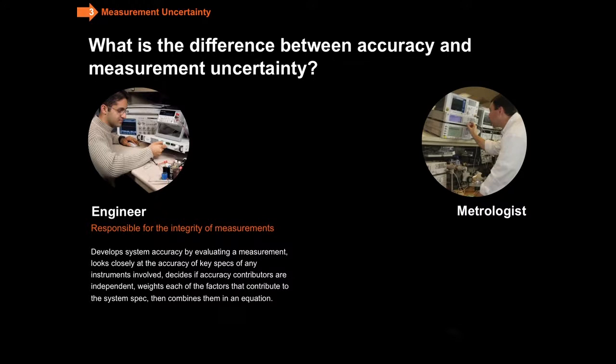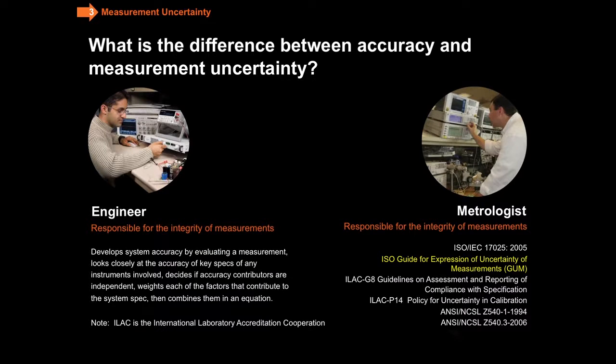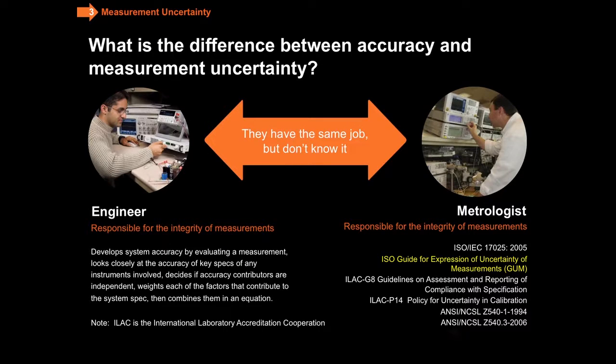So what does a metrologist do? They do almost exactly the same thing, except they follow all of these different standards that you see here. What we're talking about in this module is the guide for the expression of uncertainty of measurements. Engineers and metrologists have essentially the same job. They just talk a different vocabulary.